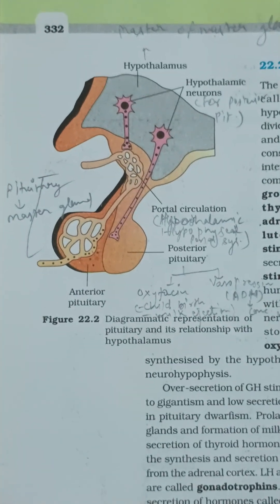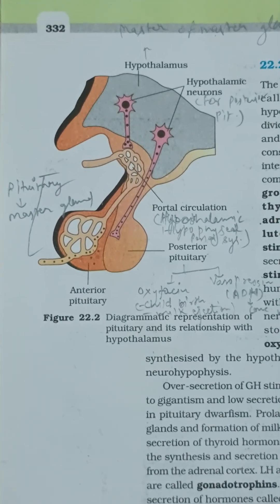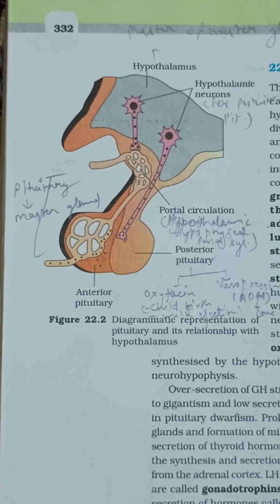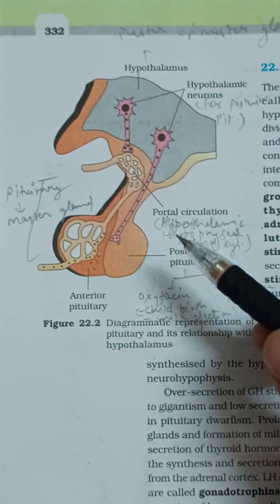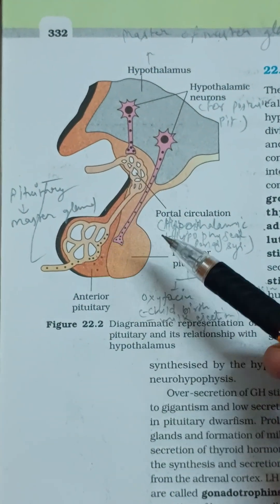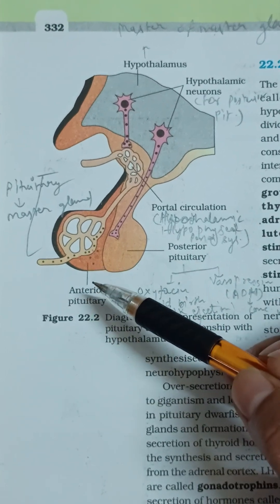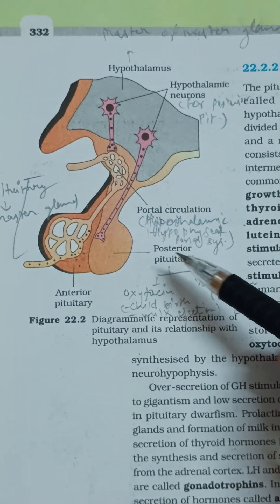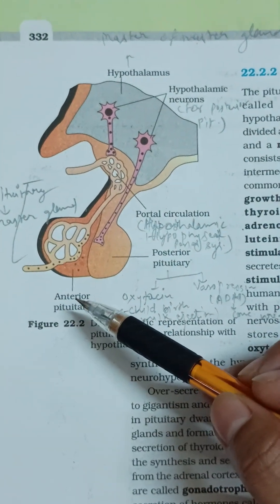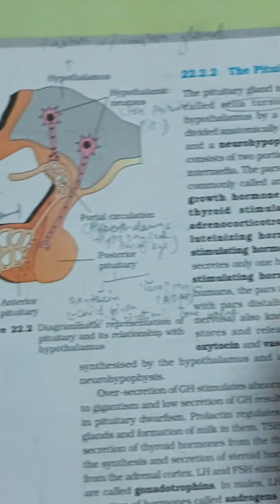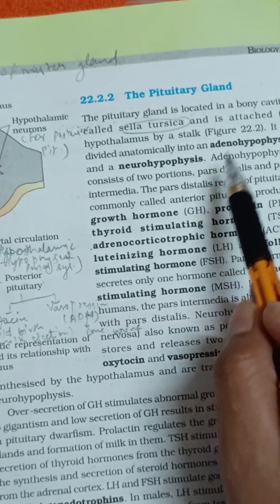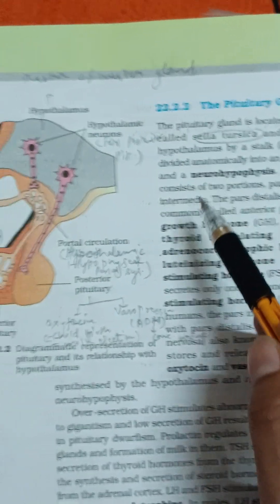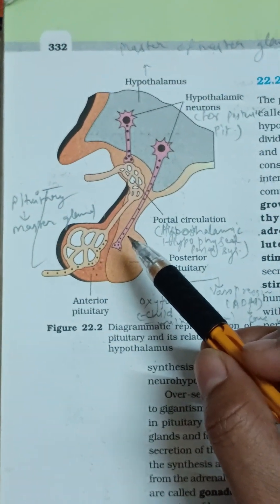In this video we will talk about hormones that are released by the pituitary gland. The pituitary gland is divided into two parts: the anterior pituitary and the posterior pituitary. The anterior pituitary is known as adenohypophysis, while the posterior pituitary is known as neurohypophysis.